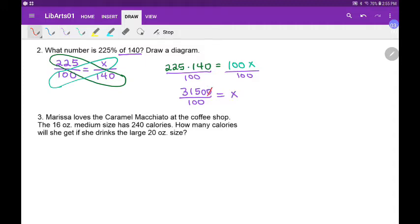And zeros cancel, right? Zeros cancel. So it turns out that X is equal to... The only thing left is the 315 without the zeros.